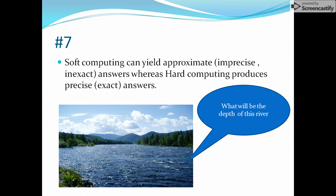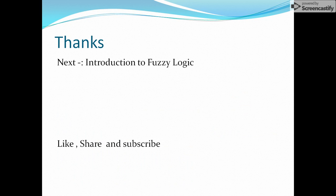And the seventh one is soft computing can yield approximate or basically inexact answers, not exact answers. In this diagram, say someone is asking you what will be the depth of this river. So you cannot give a precise answer. In that case, you will just guess some answer. But if we are taking the concepts of hard computing, we have some specific equipments and devices. Then using that, we can produce some precise answers, some exact answers.